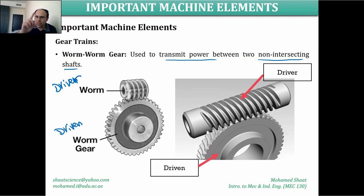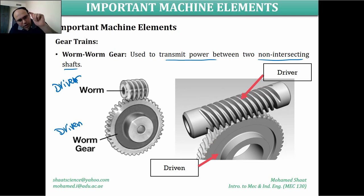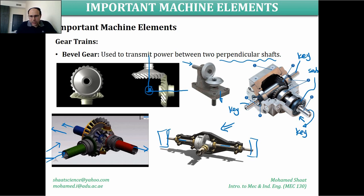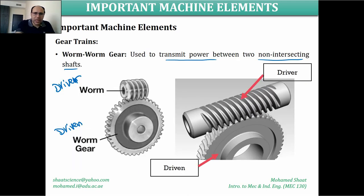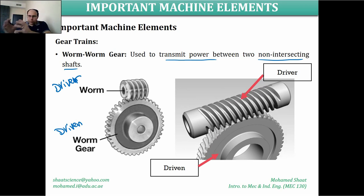The only thing that gives rotation to the worm gear is the worm itself. For any of the other mechanisms — like the bevel gear — if you give rotation to either shaft, it will rotate the other. You can switch roles. But for the worm and worm gear, you cannot. The worm must always be the driver and the worm gear must always be the driven. That is why they operate as a single unit — worm and worm gear mechanism.